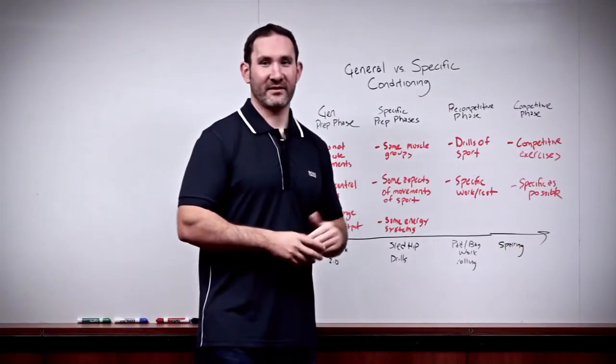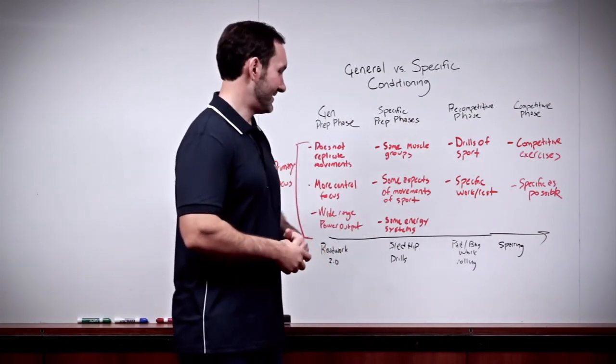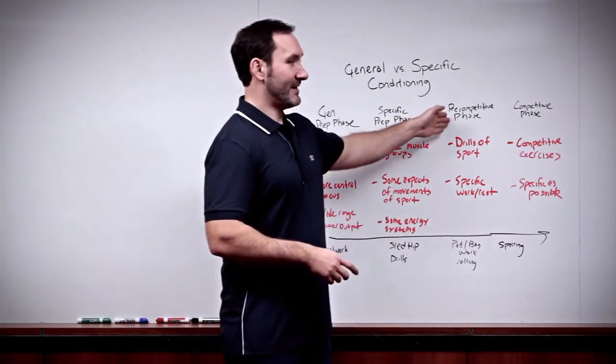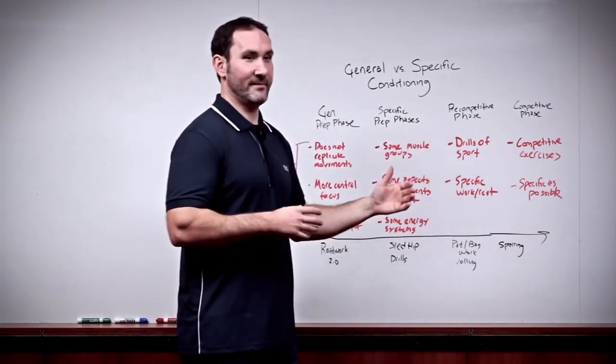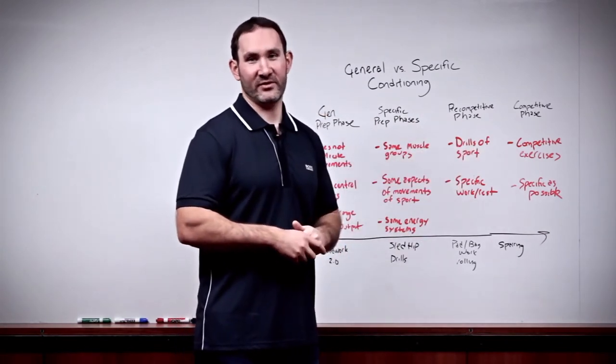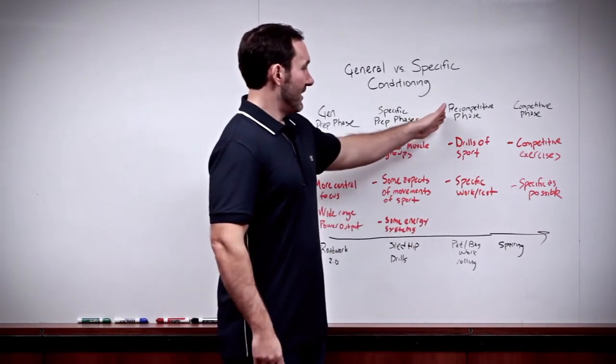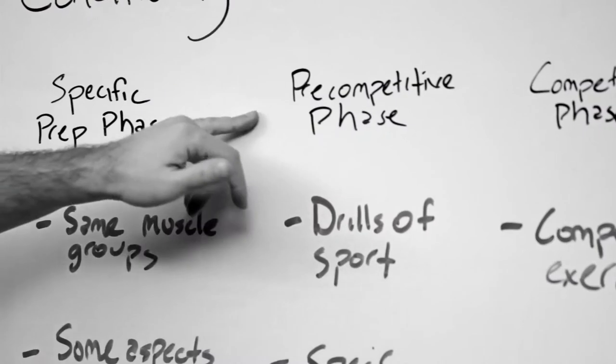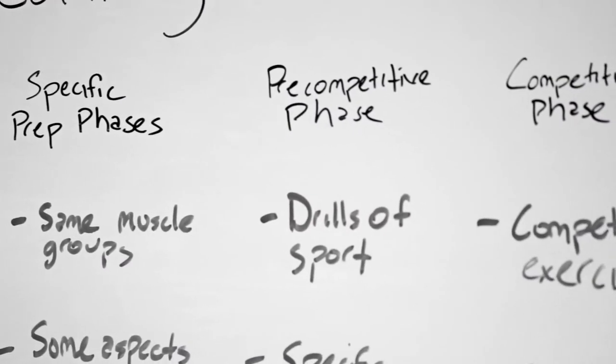This phase will generally last one to two months, depending on your competitive season. Next, we move into the pre-competitive phase. This is really where you're starting to get into the early aspects of a training camp, which is usually a month or two out from the competitive season. If you're a combat athlete, we'd call the pre-competitive phase probably the early stages of your training camp, maybe eight weeks out, ten weeks out, somewhere in that range.